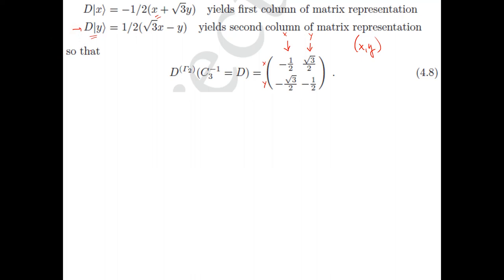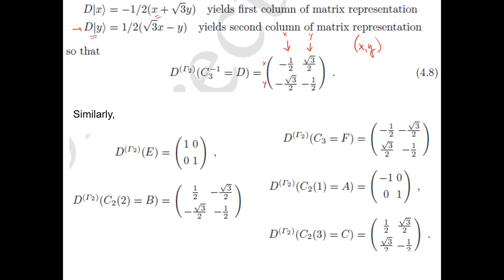Doing this for all symmetry operations of the group gives the full set of matrix representations for E: the identity, C3 operations, and all C2' operations. These are precisely the matrix representations we saw a few lectures ago when we discussed the 2D representations of the permutation group P3 — exactly the same matrices appearing here in another context.